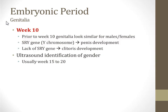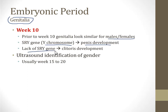Week 10 is a very important week for development of the genitalia. Prior to week 10, the genitals look similar for male and female babies. At about week 10, the SRY gene, which is found on the Y chromosome in males, leads to the development of the penis. In females, the lack of an SRY gene leads to development of the clitoris. By ultrasound, you can usually identify the gender of the baby by about week 15 to 20, when the penis is large enough to identify a male child.